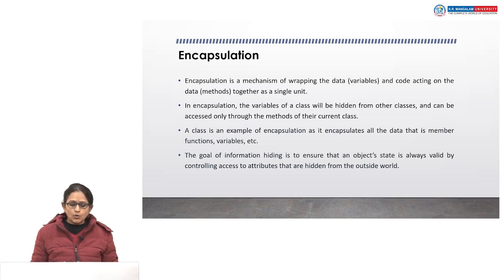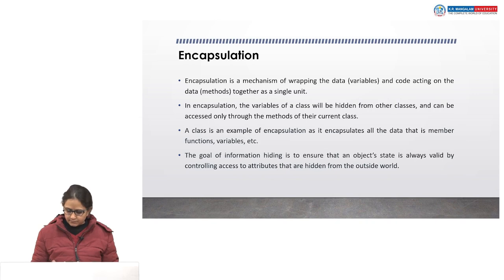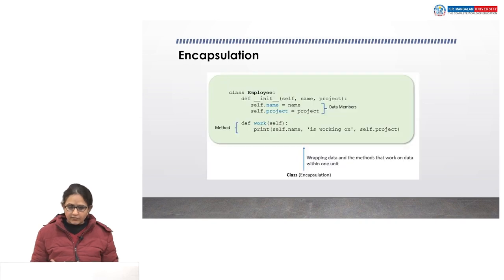Encapsulation is a mechanism of wrapping the data and methods into a single unit. In encapsulation, the variables of a class will be hidden from other classes and can be accessed only through the methods of their own. A class is an example of encapsulation as it encapsulates all the data and the functions of a class. The goal of information hiding is to ensure that the object state is always valid by controlling the access to attributes that are hidden from the outside world.